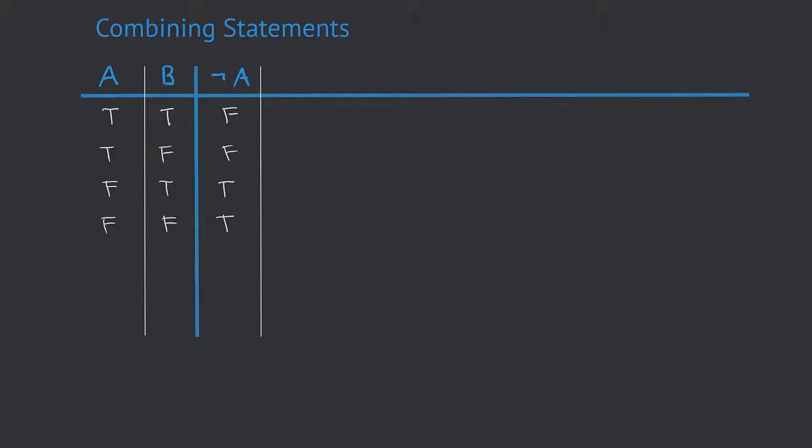The negation of A is not really a combination of two or more statements — it's rather a modification of one statement, in our case A. That is why we have only considered the values of A for figuring out the values of not A, or the negation of A. So now let's have a look at a real combination of two statements, A and B — specifically the conjunction, or the AND operator.